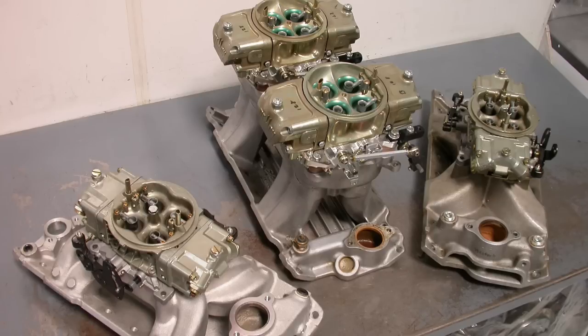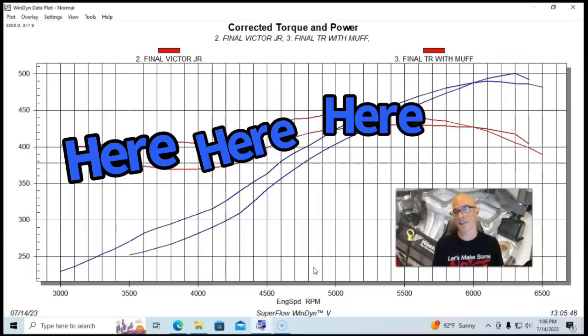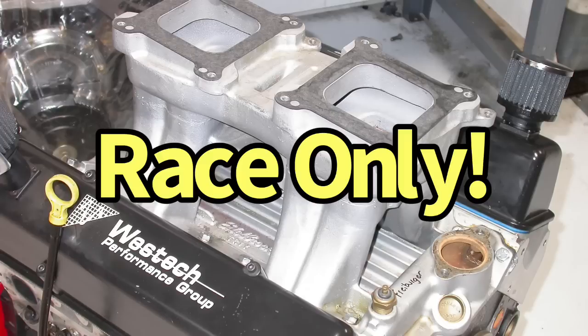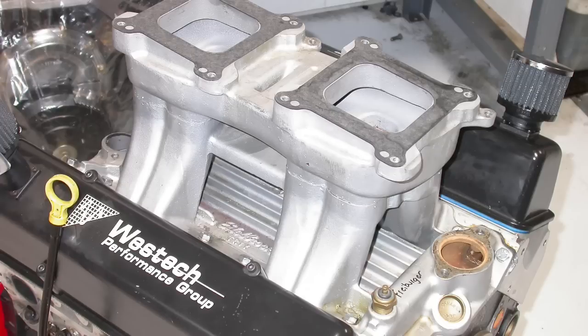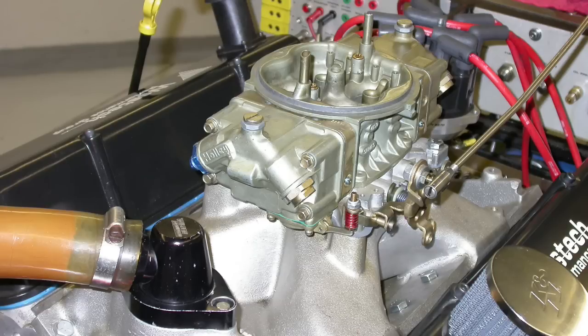You can see that the Tunnel Ram did better than the single plane from everything below 6000 RPM, basically everything below 6000, which goes to show you that a lot of people tend to think, 'Hey, Tunnel Ram, that's a high RPM race-only deal.' No, actually it has long runners. It actually works very well in the middle part of the curve. Now let's take a look—I'll get rid of the Victor Jr. here and we'll bring up the RPM Air Gap.